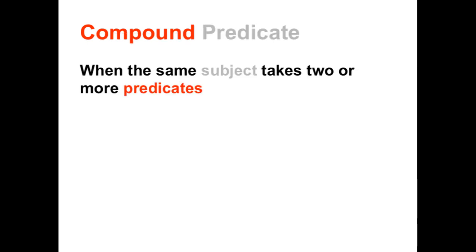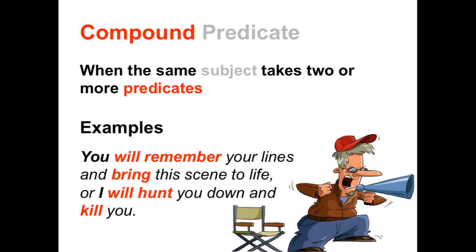A compound predicate is when the same subject or group of subjects takes two or more predicates. Here is an example: 'You will remember your lines and bring this scene to life, or I will hunt you down and kill you.' Surely he is just using figurative language — he is not going to kill anybody. But let's look at the structure of this sentence. There are four predicates: the verb phrase 'will remember,' the verb 'bring,' the verb phrase 'will hunt,' and the verb 'kill.'